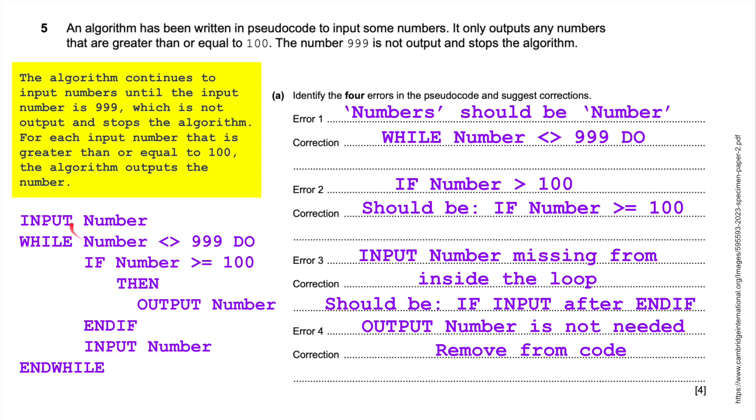So here we go. I've rewritten it. Input number, while the number is less than or greater than 999, do if number is greater than or equal to 100, then output the number. End if, input number. And then end the while loop. That should work. That's question five.